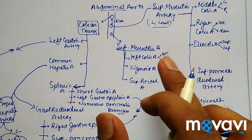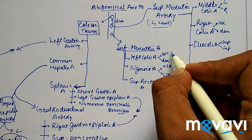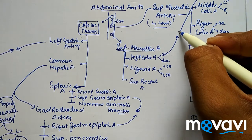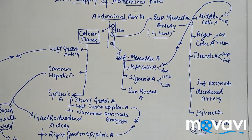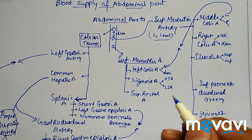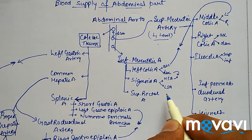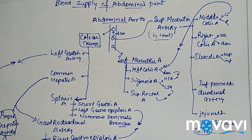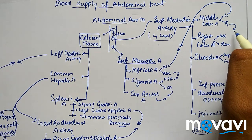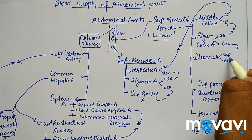Now for the anastomoses: the ascending branch of the left colic artery anastomoses with the left branch of the middle colic artery. The descending branch of the left colic artery anastomoses with the highest sigmoid artery, and the lowest sigmoid artery anastomoses with the superior rectal artery. The ascending branch of the right colic artery anastomoses with the right branch of the middle colic artery, and the descending branch of the right colic artery anastomoses with the superior branch of the ileocolic artery.